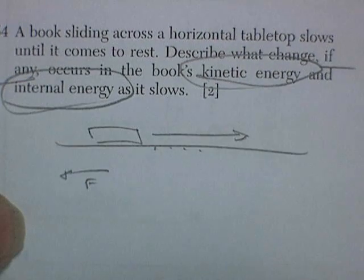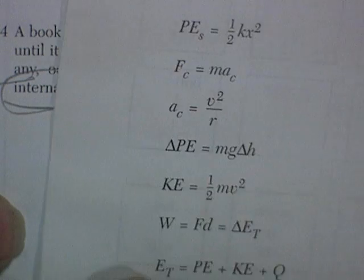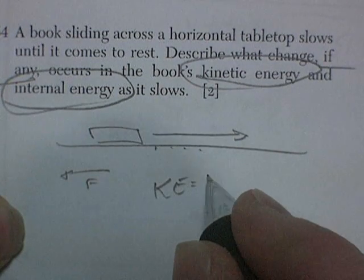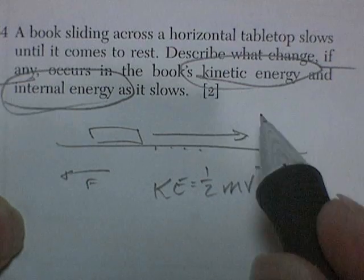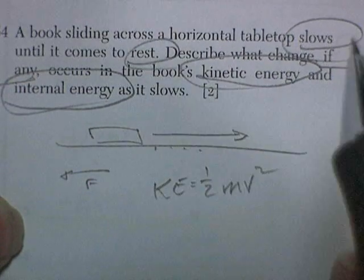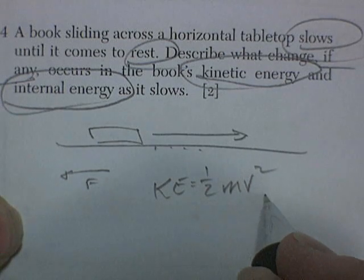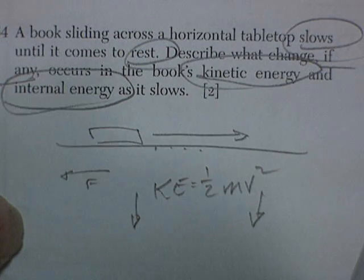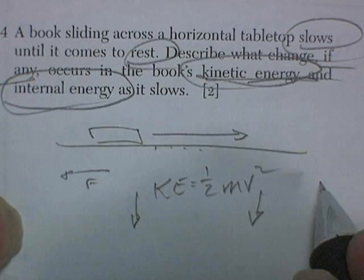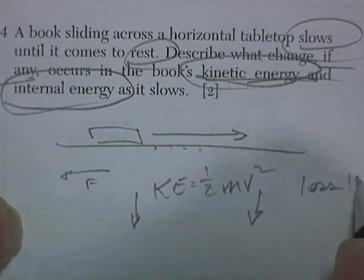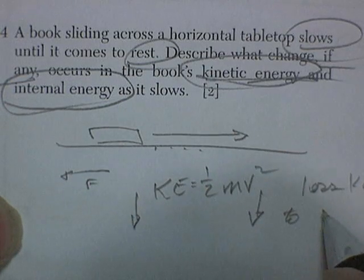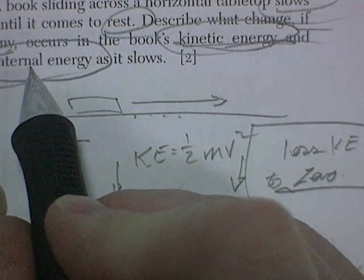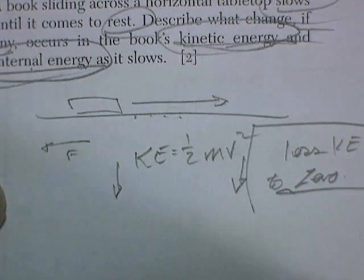Kinetic energy equals one-half mv squared. We're told it's going to slow down and stop. It's got some kinetic energy, but as the velocity goes down, so will the kinetic energy drastically. The kinetic energy will lessen to zero. Internal energy is heat.